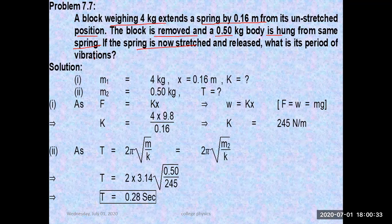Here, first the mass given is 4 kg and at that time expansion produced is 0.16 meters. We are asked to calculate the spring constant. Then the mass given is 0.50 kg. We have replaced 4 kg with 0.50 kg and then we are asked to calculate time period.